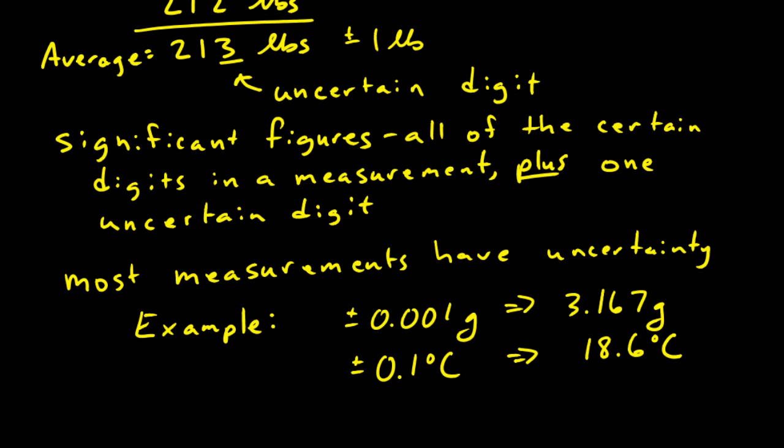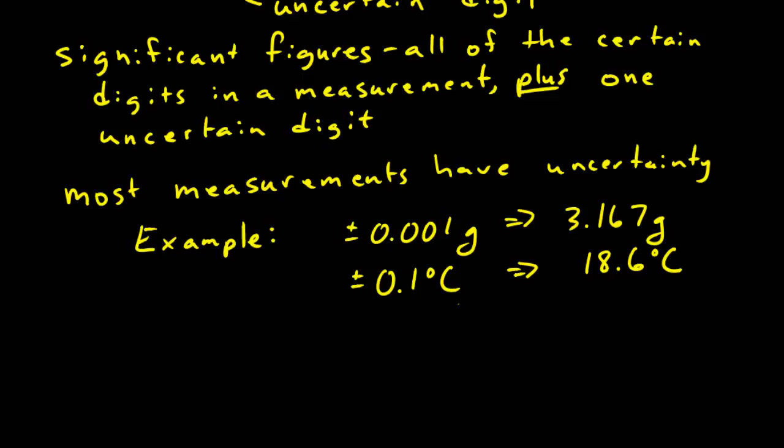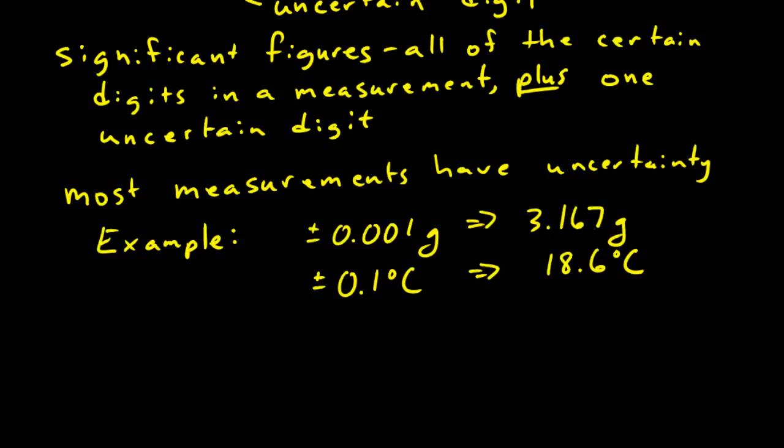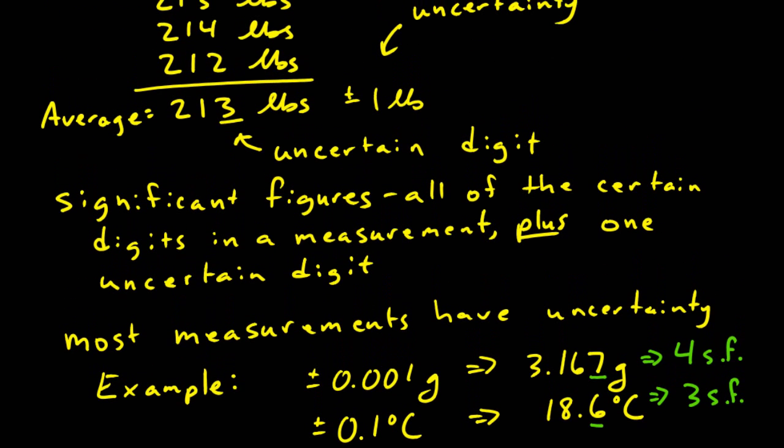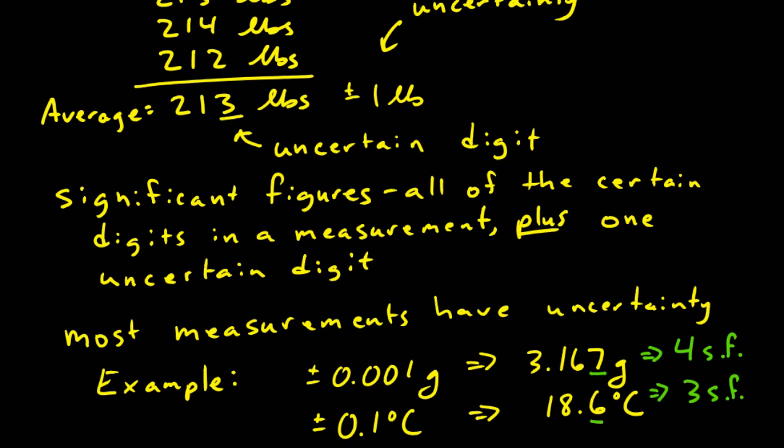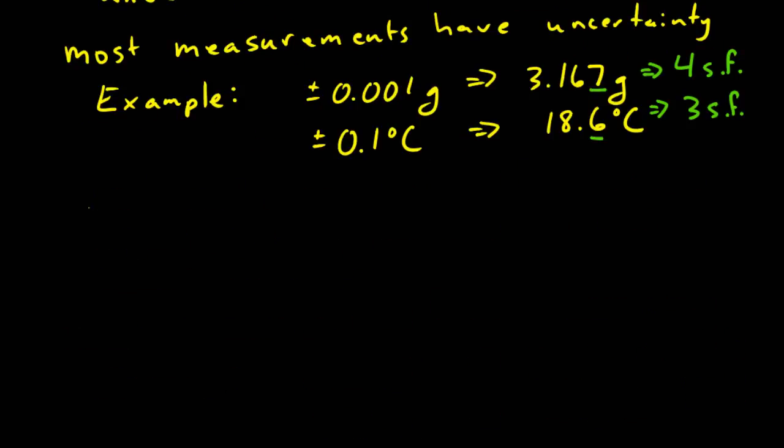Since significant figures are all of the certain digits in a measurement plus one uncertain digit, 3.167 grams would have four significant figures, and 18.6 degrees Celsius would have three significant figures. Going back to the average reading on the scale of 213 pounds, this value would have three significant figures. Now the place where introductory students have the most trouble is dealing with zeros.